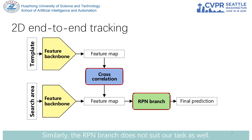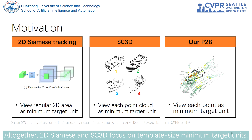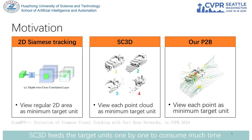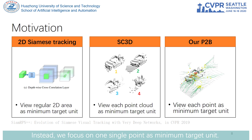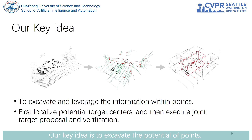Similarly, RPM does not suit our task either. Both 2D Siamese and SC3D focus on template-sized minimum target units. SC3D feeds target units one by one, consuming much time and remaining not end-to-end trainable. Instead, we focus on one single point as the minimum target unit — a change of view that helps us speed up and enables an end-to-end mechanism.